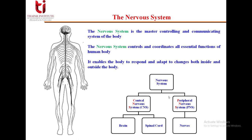You can see in this block diagram that the nervous system can be classified as the central nervous system and the peripheral nervous system. The central nervous system comprises the brain and the spinal cord. You can see in this figure it is locating the brain and the spinal cord.